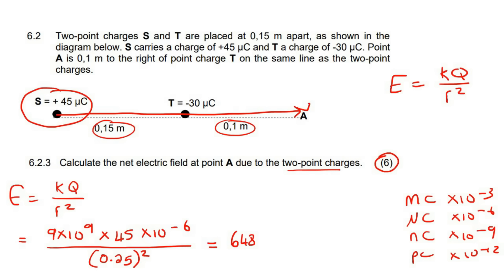And that's going to give us 648,000 N·C^-1. Now the units of electrostatic or electric field is N·C negative one.